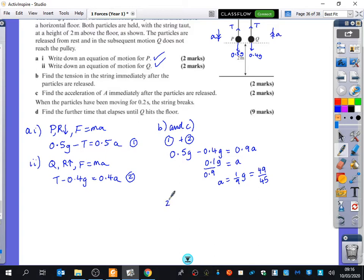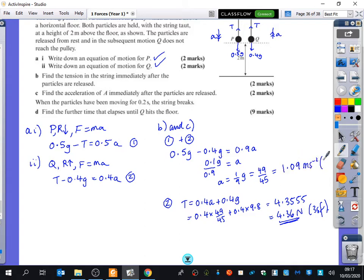So now we're going to rearrange two. So we get T equals 0.4A plus 0.4G. So that's 0.4 multiplied by this, which is 49 over 45, plus 0.4 times 9.8. So we're going to multiply that by 0.4 and add on 0.4 times 9.8. And we get that the tension is 4.3555 recurring or just 4.36 newtons to three significant figures. I guess I should have really said that the 49 over 45 is 1.09 metres per second squared to three significant figures.